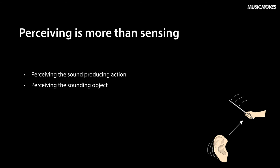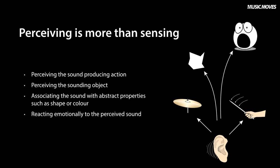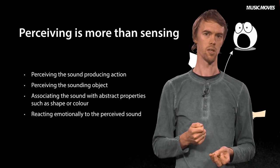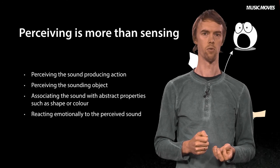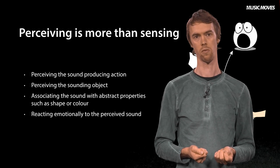And although the sounds produced by a single object may be very different, we are able to attribute them all to the same object, like these cymbal sounds. We have seen that sounds may give associations of properties of other domains, such as shapes, and we know that musical sound may cause strong emotional reactions. This demonstrates some of the highly complex mechanisms involved in perception. In the following videos, we will have a closer look at the implications of this in music research.